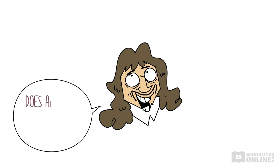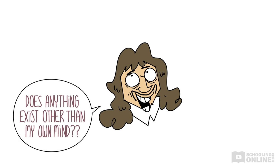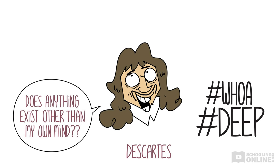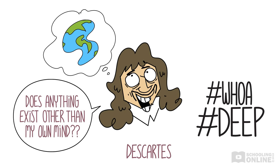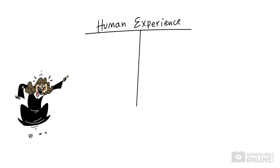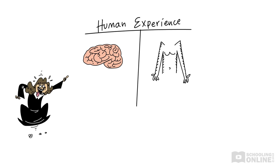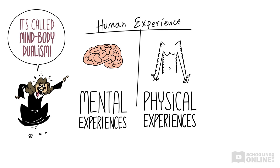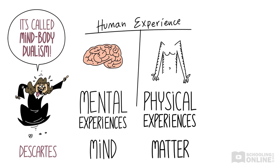Because he could doubt the existence of everything except the fact that he was thinking, Descartes could doubt whether anything existed except for his own thoughts and mind. What if the whole world was just a hallucination in his own head? Maybe he didn't even have a body. From this conclusion, he proposed that human existence can be divided into two distinct categories. So thinking — what minds do — must be separate from bodies and the rest of the physical world. Dividing existence into mental and physical experiences is called mind-body dualism. For Descartes, all of human experience can be divided into mind and matter. There is nothing else.